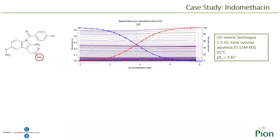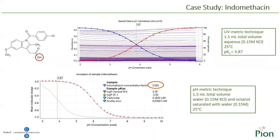The next case study is indomethacin. Indomethacin has a carboxylic acid with a pKa of approximately 4. The titration was performed UV-metrically from high pH where the sample was completely ionized. The pKa determined was 3.87. Once the pKa was determined, log P was also performed — and it was then that the results didn't make sense. The concentration factor of indomethacin was 2, meaning that the instrument was titrating double the amount of sample. However, this is not the same case as Rose Bengal because indomethacin only has one pKa.